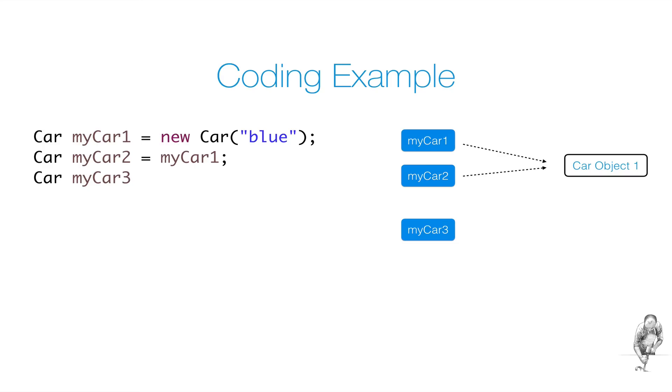And finally, we create a third car reference variable called myCar3 and assign it a new car object. So now we have two blue car objects and three reference variables of type car, referencing those two objects.